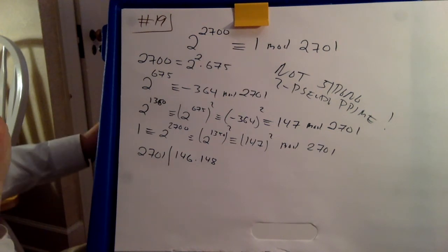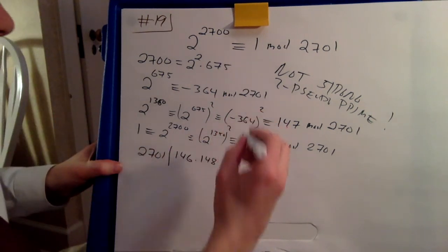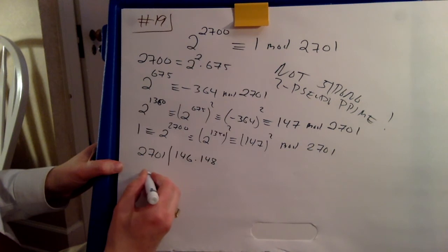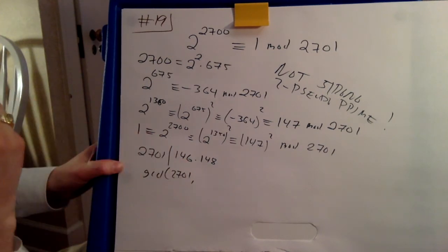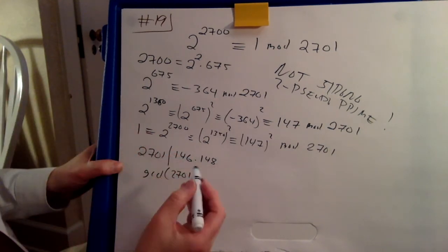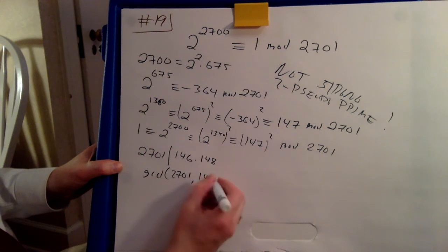So now to do the calculation, you can compute the greatest common divisor between 2071 and now you just pick one of these. Or you can pick 148.